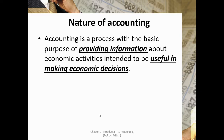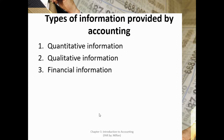Accounting is a process with the basic purpose of providing information about economic activities intended to be useful in making economic decisions. This is the nature of accounting. There are three types of information provided by accounting: quantitative information, qualitative information, and financial information. Quantitative information is information expressed in numbers, quantities, or units — for example, how many sales you had for the year. Qualitative information is expressed in words or descriptive form and is found in the notes to financial statements as well as on the face of the other components of financial statements.